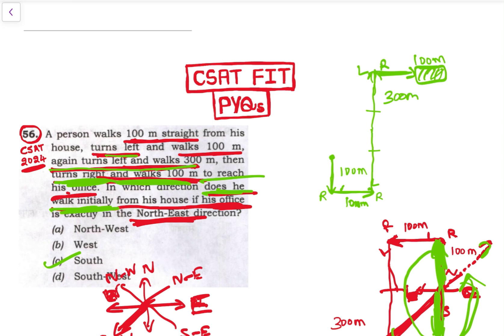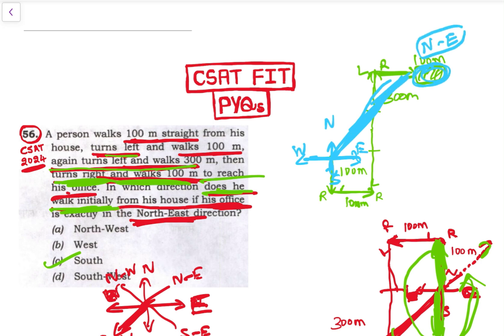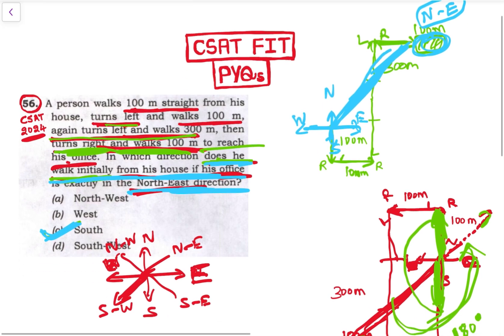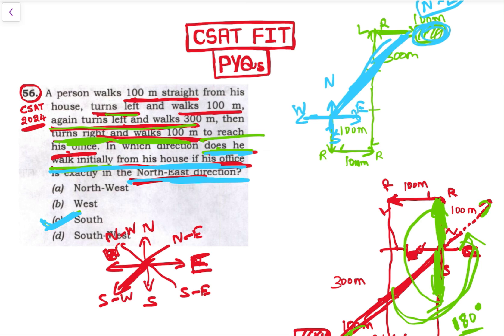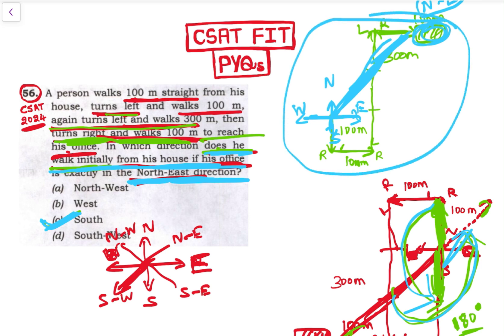This is home. This is north, this is west, this is east, and this is south. Now he is in the northeast direction — this is the office. So the office is in the northeast direction, confirmed. The answer is that he walks initially southwards from his house. Option C is the answer. A very good question!